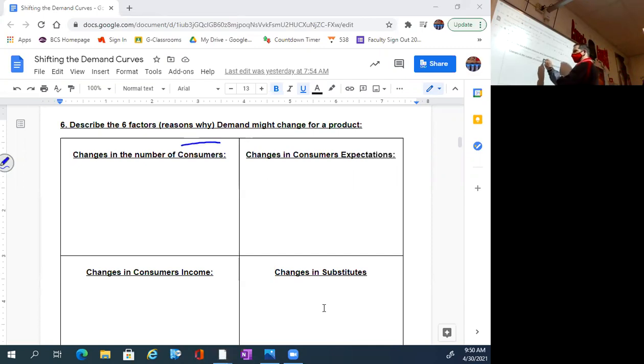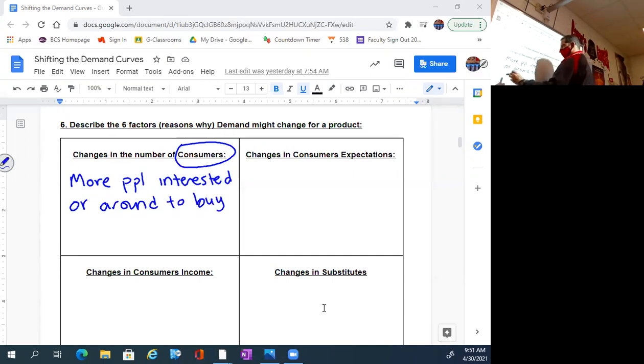Changes in the number of consumers. More people interested or around to buy equals demand up. Vice versa. If the population booms, then demand is going to obviously go up. If the population of the town or the city goes down, then the products around that town and city are obviously going to go down.